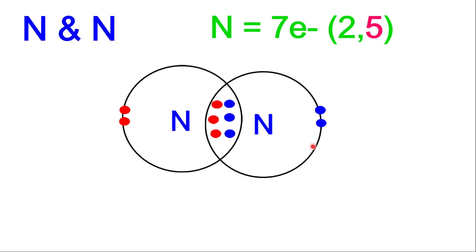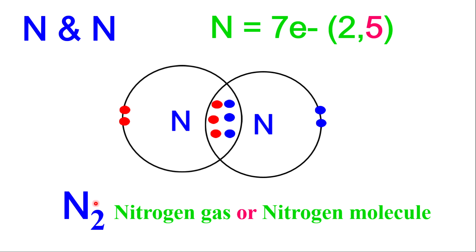There's something to note at this point: the electrons within the bonding space are called bonding pairs. Within nitrogen, there are 1, 2, 3 pairs — so there are 3 bonding pairs. The electrons that do not take part in the bonding and are found outside of that bonding section are called lone pairs. Each nitrogen atom has 1 lone pair, but there are 3 bonding pairs. You could rewind the video and look at the other atoms we examined and count the bonding pairs and lone pairs. The formula for this compound will be N₂, which is nitrogen gas or the nitrogen molecule.